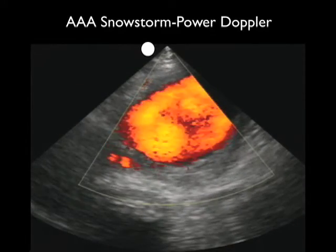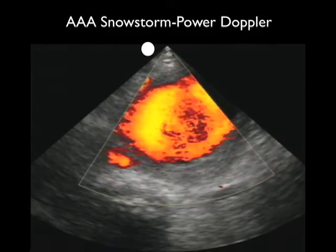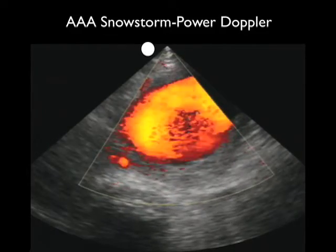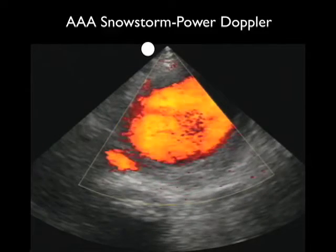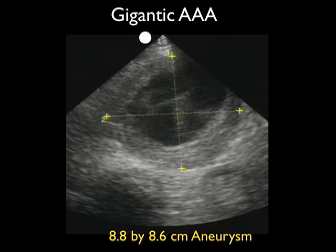Using color power Doppler confirms this is a vascular structure. We can see the chaotic flow of blood round and round within this triple-A, which contributes to the substantial burden of clot formation. Measuring this gigantic abdominal aortic aneurysm in short axis from outer wall to outer wall, we get a measurement of 8.8 by 8.6 centimeters. This patient went directly to the operating room and had successful placement of a stent.